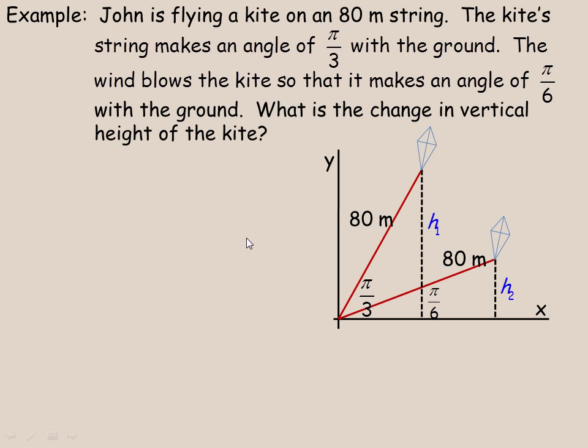Flipping over to the last page, John's flying a kite on an 80-meter string. And we're told that the kite's string makes an angle of π/3 with the ground. So there's the angle of π/3 there. And then the wind blows must blow from this side, so the kite's blowing lower.